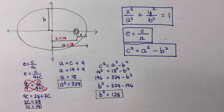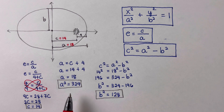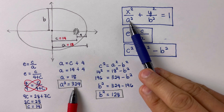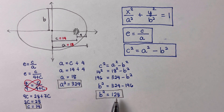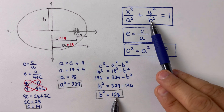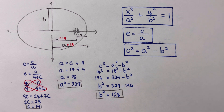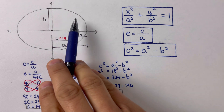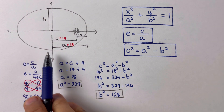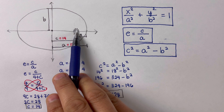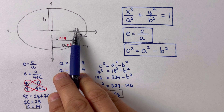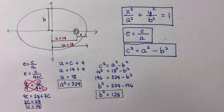We now have values for both a squared and b squared. Plugging a squared = 324 and b squared into the standard ellipse equation, the equation for the path followed by Comet X as it moves around the star ME 106-21 is determined.